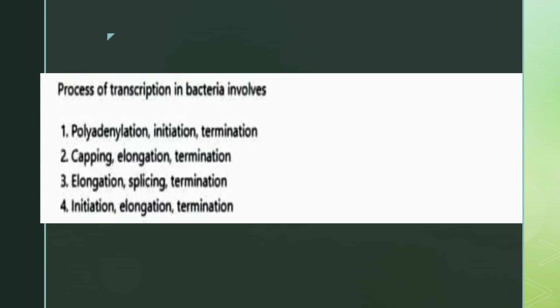The next question: the process of transcription in bacteria involves what? The options are: poly-adenylation, initiation, termination; capping, elongation, termination; elongation, splicing, termination; or initiation, elongation, termination. The right answer is option four: initiation, elongation, and termination.